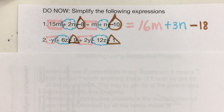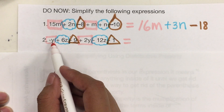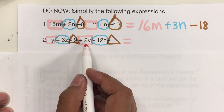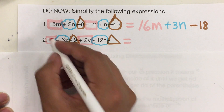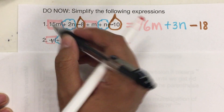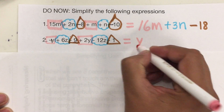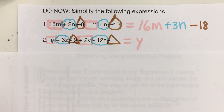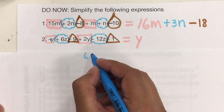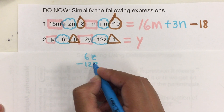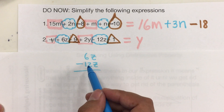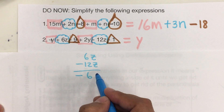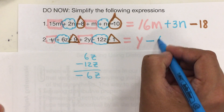Again, we have to pay attention to the signs. Negative Y and positive 2Y — different signs, we subtract and leave the sign of the bigger one. So 2 minus 1. Remember that when there is no coefficient, there is a 1 in there — negative 1. That equals 1Y, but we don't need to put the 1. When we have 6Z and negative 12Z, different signs, we subtract and leave the sign of the bigger one, so negative 6Z.